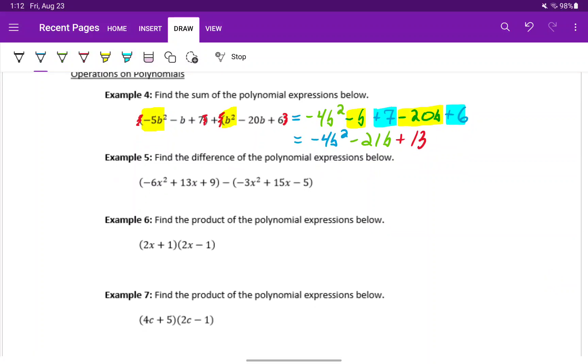Example 5 is going to be very similar, except for the fact that now we're subtracting these two polynomial expressions. Since we're subtracting that entire second expression inside a set of parentheses, we'll have to distribute that negative through each term. That means our first polynomial will remain unchanged.